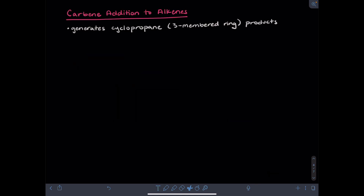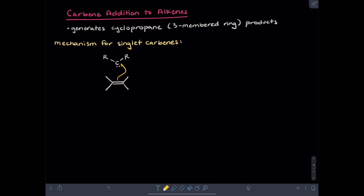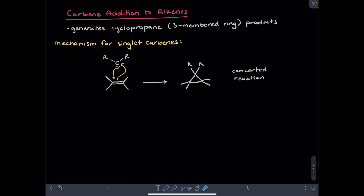Carbenes can add to alkenes to generate cyclopropyl three-membered ring products. The mechanisms for singlet versus triplet carbenes will differ. In the case of a singlet carbene, the reaction will be concerted. You would take the pi bond as a nucleophile to attack the carbene-carbon, and take the carbene lone pair and bring it to one of the carbons of the alkene. In this single step, both carbons of the alkene form a new bond to the carbene-carbon, generating the three-membered ring.